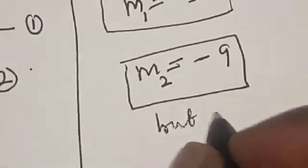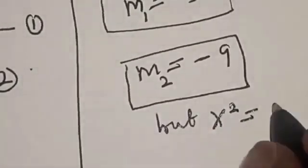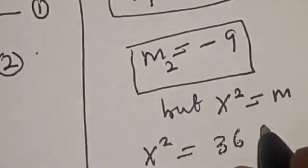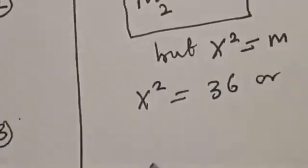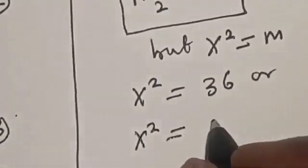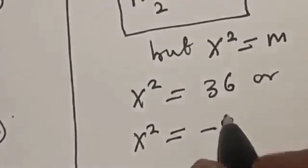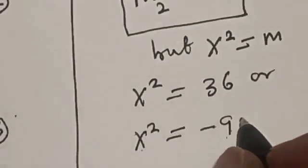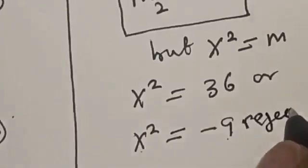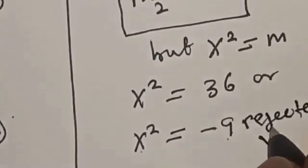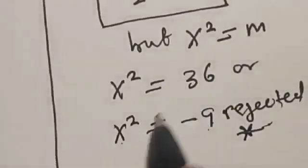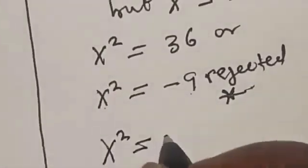But m represents x squared. Therefore x squared equals 36, or x squared equals minus 9. But x squared cannot equal minus 9, since this is negative, so that solution is rejected. The only valid solution is x squared equals 36.